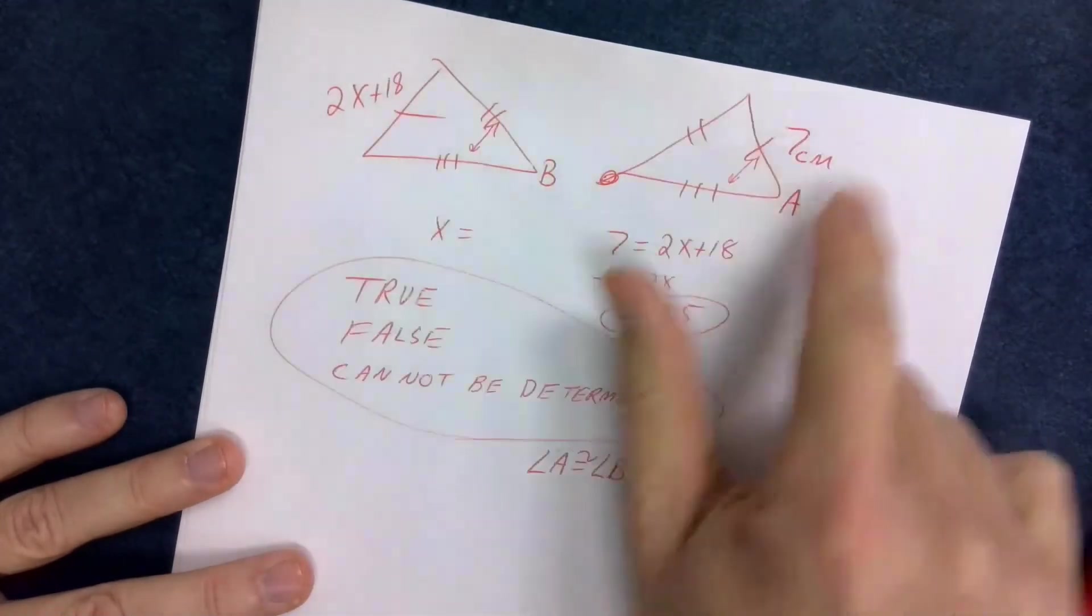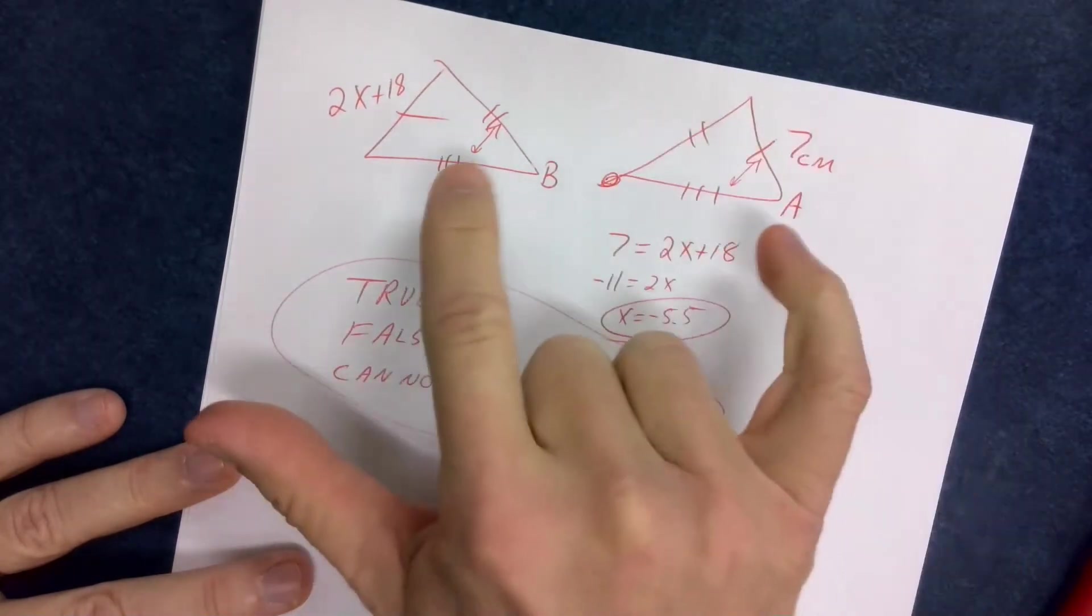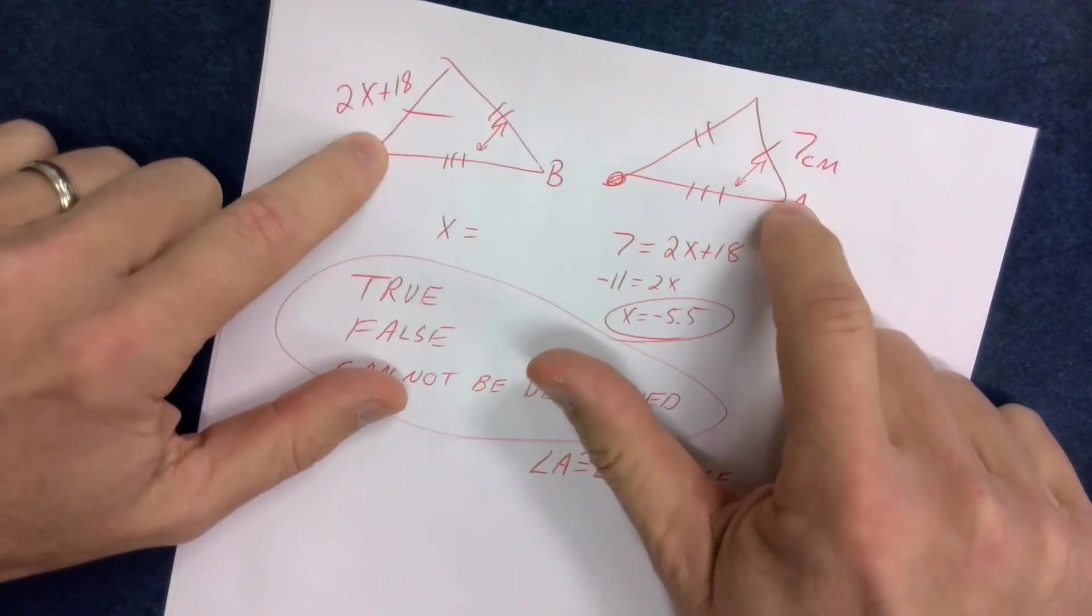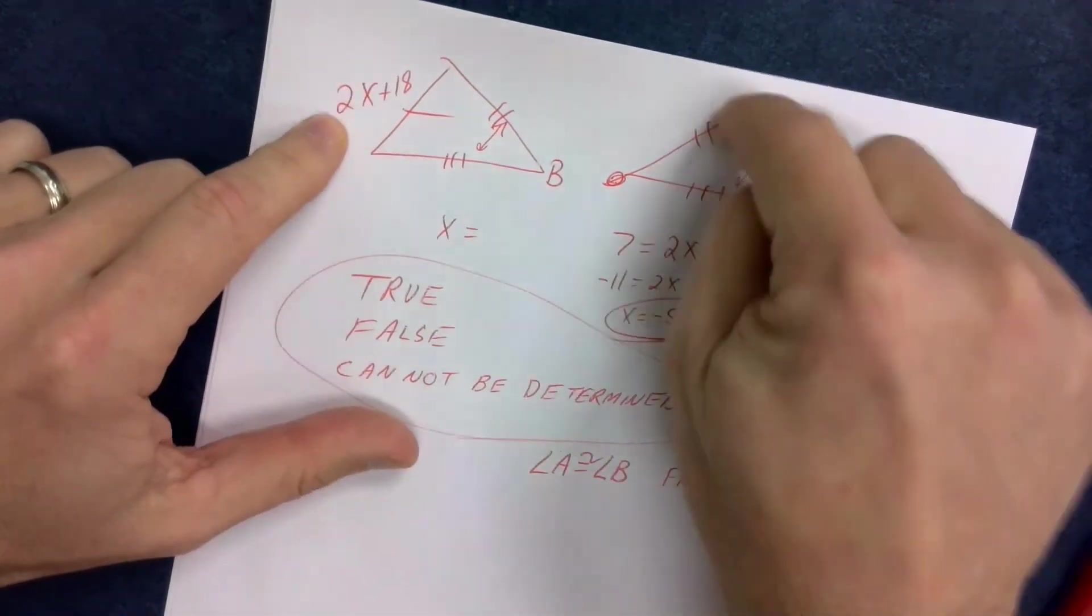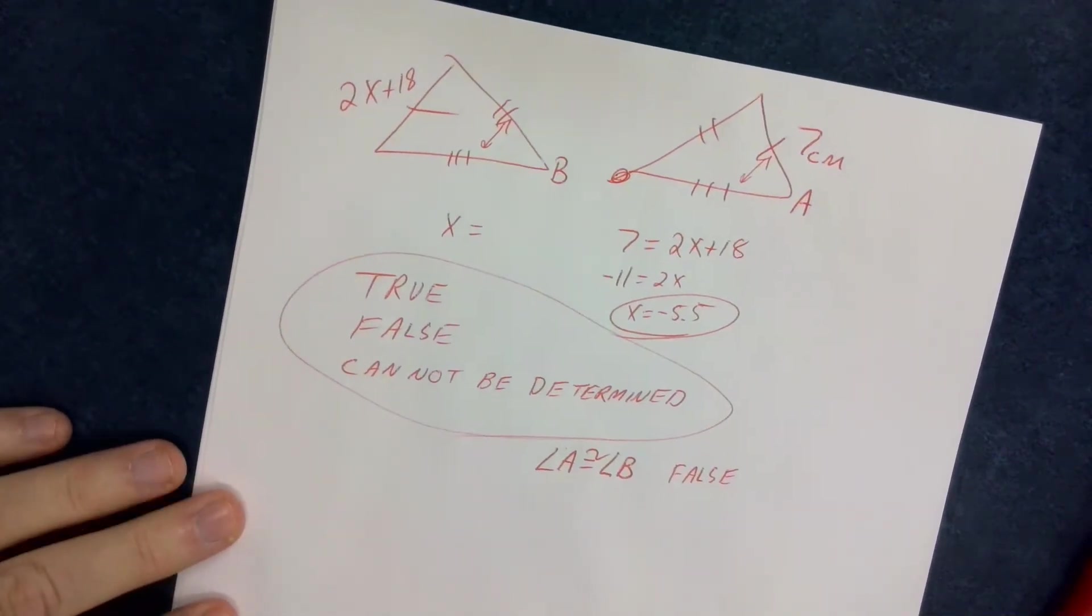Now, I can't put that it cannot be determined, because of the fact that since these have singles, these have doubles, and these have triples, that guarantees that this is a scalene triangle, and if it's a scalene triangle, then none of the angles can be congruent to each other, except for the ones that match up. So they have to be three different angles on a scalene triangle.